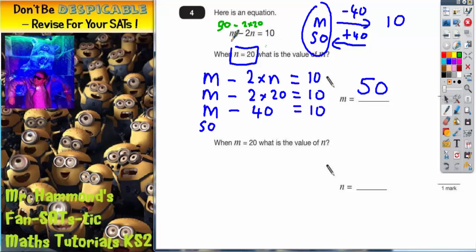Well, 50 take away 2 twenties—2 twenties is 40—so 50 take away 40 is indeed 10. So we know that m must be the correct answer of 50.